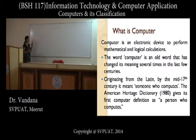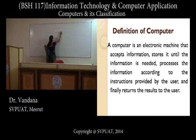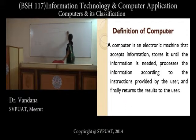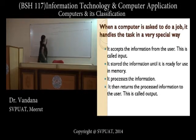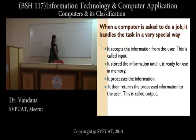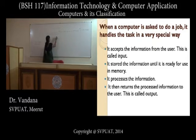So what exactly is a computer? We can say that it is an electronic device that stores data based upon the instructions provided by the user, processes it, and produces the desired result. The basic operations are: input provided by the user, processing, and producing the desired output.